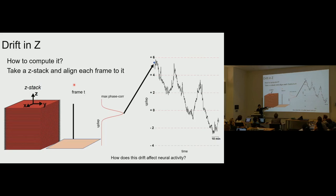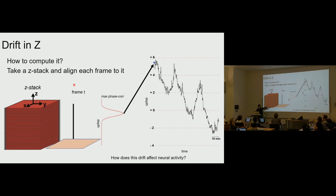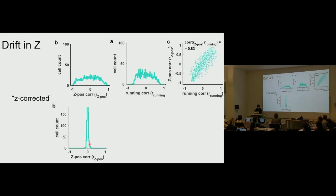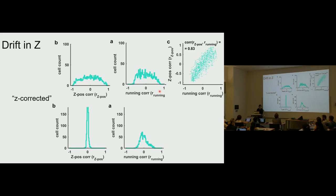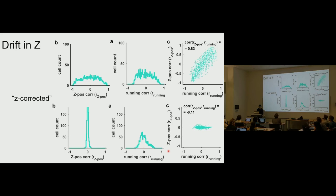After performing Z correction — subtracting the Z trace off from the baselines of each cell — the cells are no longer correlated with Z position. The running correlation also becomes much smaller. There are still some cells correlated with running, which is expected since running-correlated activity in V1 has been validated in electrophysiology recordings. But the running correlations are not as large as without Z correction. This is an important confound to be aware of in your own recordings.